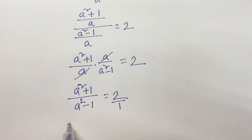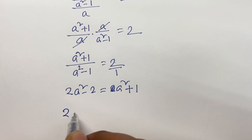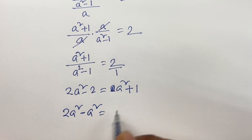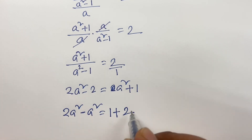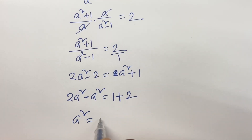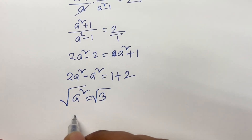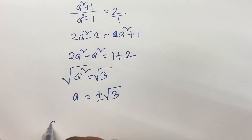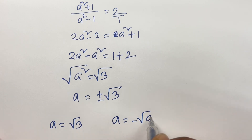Cross-multiplying: this times this gives 2a squared minus 2, and this times this gives plus 1. So 2a squared minus a squared equals 1 plus 2, which gives a squared equals 3. Taking square roots on both sides, a equals plus or minus square root of 3.